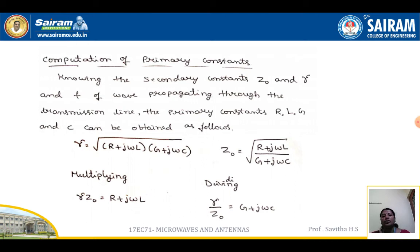Now, computation of primary constants. The primary constants used in transmission lines are R, L, G, and C. To find these from problems, we use secondary constants: the characteristic impedance Z₀, the propagation constant gamma, and frequency f. After the wave propagates through the transmission line, the primary constants R, L, G, and C can be obtained.